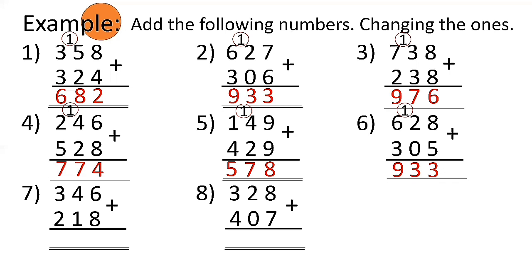Number 7: 346 plus 218 — 6 plus 8 is 14, bring down 4, carry 1 for the tens place. 4 plus 1 is 5 plus 1 is 6 in tens. 3 plus 2 is 5 in hundreds. So the answer is 564. Number 8: bring down 5, carry 1 to tens place. 2 plus 0 is 2 plus 1 is 3. 3 plus 4 is 7. So the answer is 735.